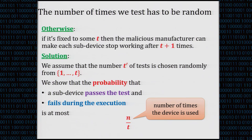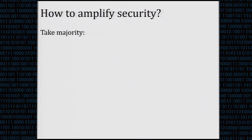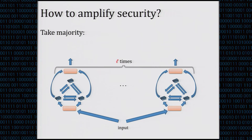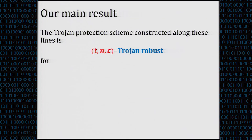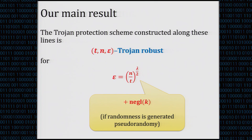The natural question is how to amplify security, since N over T gives only polynomial error — never negligible. A simple solution is to take a majority: repeat the same thing L times and take the majority of outputs. Even if one instance fails, it will likely be overwhelmed by the correct L minus one others. Our main result is a TN-epsilon Trojan-robust scheme where epsilon equals (N/T)^(lambda/2) plus a negligible error if randomness is generated pseudorandomly, giving computational security since pseudorandom generators are computationally secure.